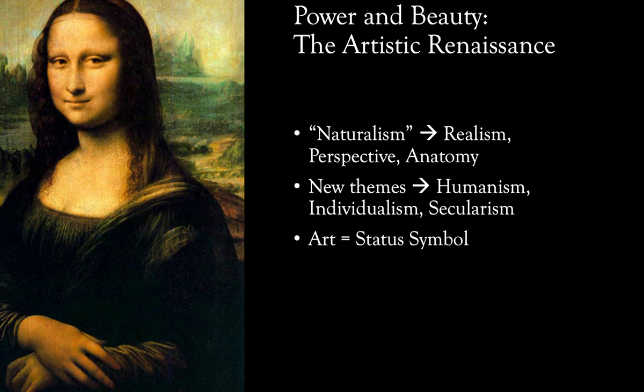Renaissance artists considered the imitation of nature their primary goal, introducing what is basically a human-centered naturalism into Western art. To achieve this, Renaissance artists would develop mathematical techniques and utilize scientific observation to accurately portray reality. An example of these mathematical techniques is something called linear perspective, which comes from geometry — they want to create that sense of depth with a vanishing point, giving the art a 3D look.